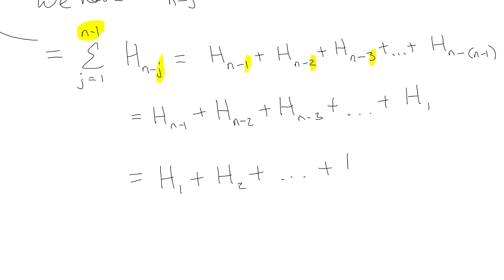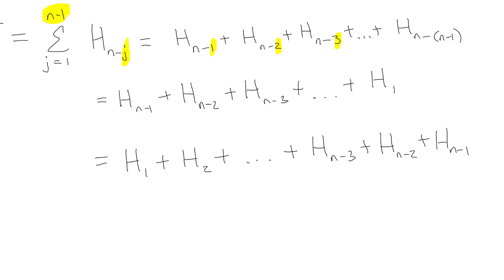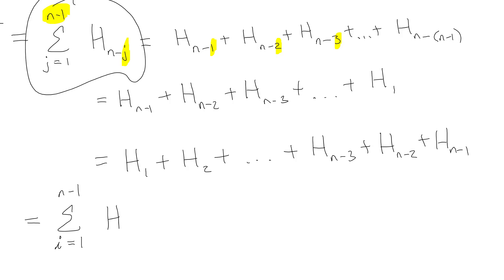My whole goal in life is to make math make more sense, and writing things in ascending order is more natural. So I can rewrite this — using any index I want, let's call it i — as the sum for i from 1 to n−1 of H_i. That's a little bit easier to count and think about.